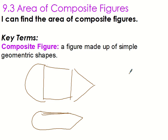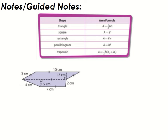It's kind of like a compound word — one word made up of two words. So a composite is similar. Here are all the formulas to find the area of our simple geometric shapes: triangle, square, rectangle, parallelogram, and trapezoid. That way you have all of them and can use them when you need to.